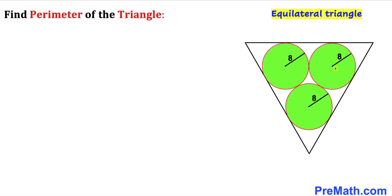Therefore we conclude that this is an equilateral triangle, meaning this side equals this side equals this side. Since this is an equilateral triangle, all of these angles are going to be 60 degrees each.